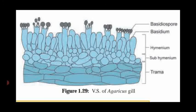These basidiospores fall on a suitable substratum and develop into new Agaricus hyphae or mycelium. That is the structure of the fruiting body of Agaricus — or structure of basidiocarp — and vertical section of a gill, which clearly states how basidiospores are produced in the fruiting body named basidiocarp.